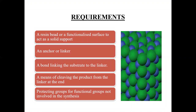What are the requirements for combinatorial chemistry using solid phase? Firstly, a resin bead or solid support is required — we use a resin sticky bead for solid support. Next is an anchor or linker: to link the reactant to the solid surface, we attach the reactants to the solid surface by using the linker. Then there is a bond linking the substrate to the linker, connecting the linker to the polymeric surface.